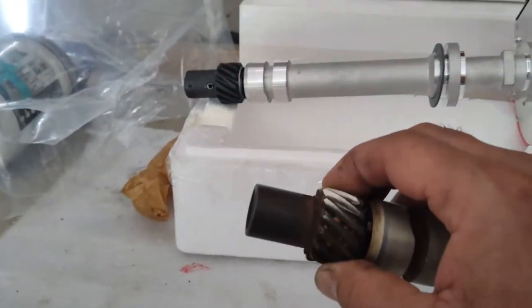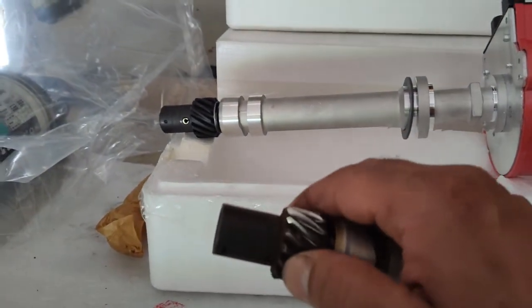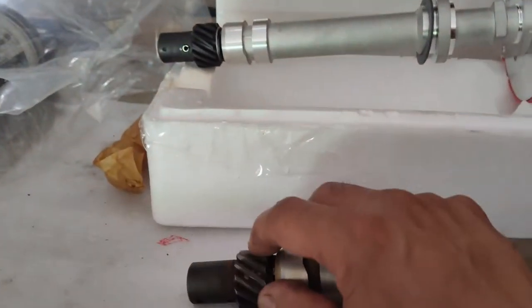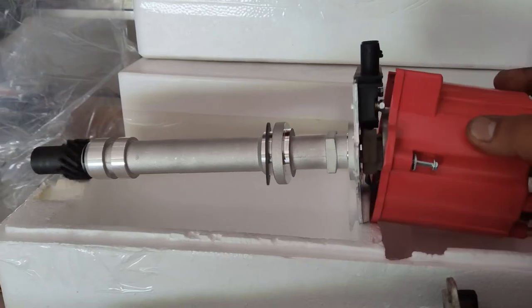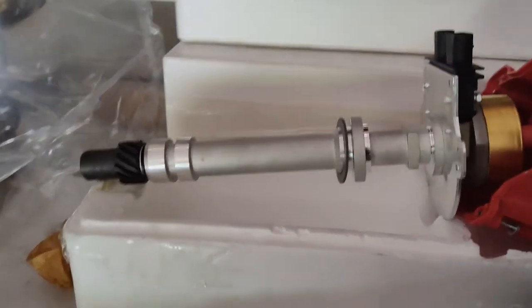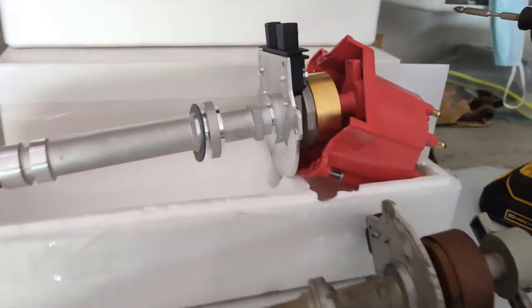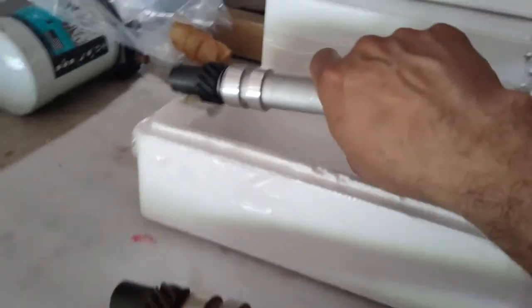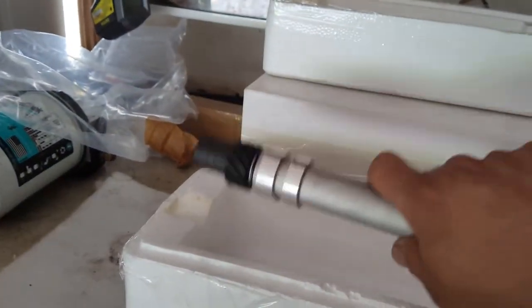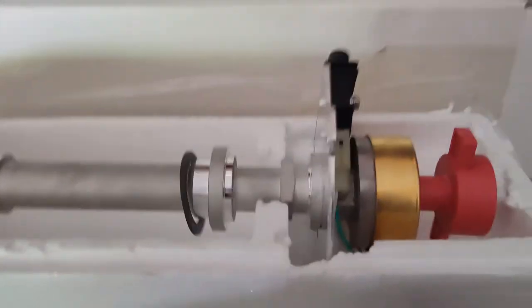Since this does have a lot of wear on that gear, instead of just buying the gear I went and ordered a full distributor. You can get these on Amazon or even eBay. They're pretty cheap - $40 to $50. You get the complete set: comes with the gear, comes with the cap, comes with the rotor.